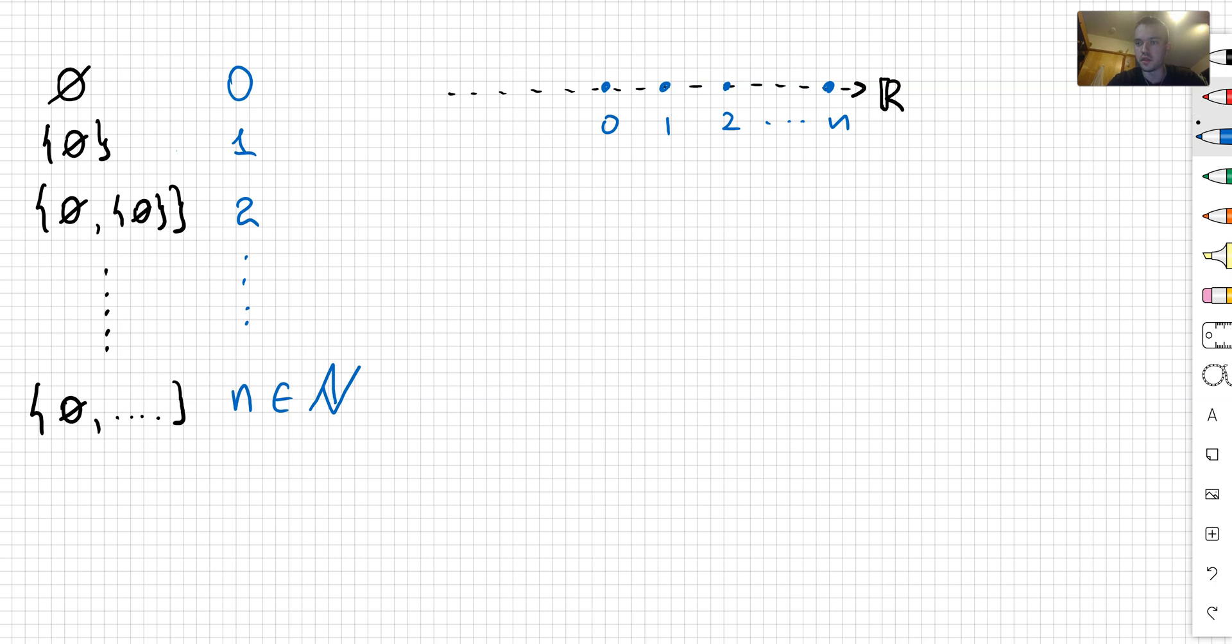From natural numbers we're going to move to integers. So what we're going to do is take the natural numbers except 0 and just reflect across 0. We're going to change the sign of each of the numbers.